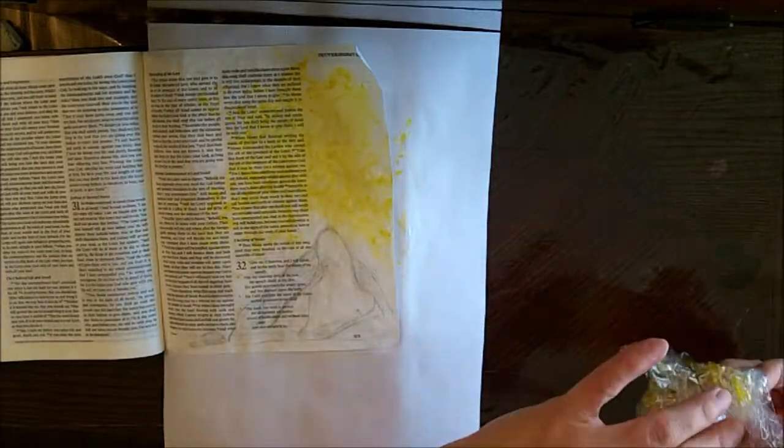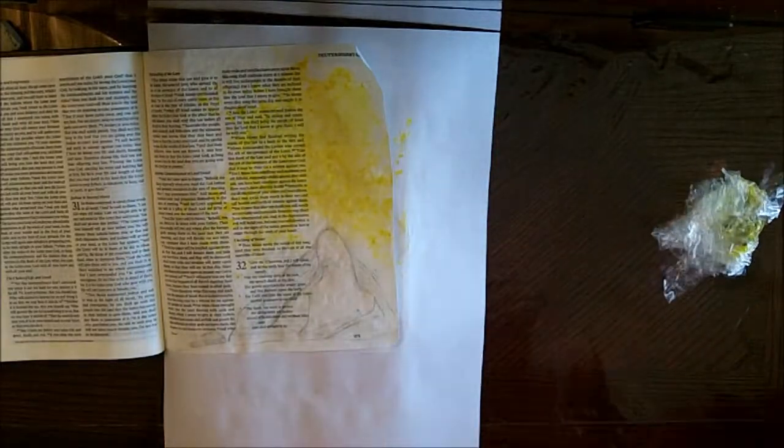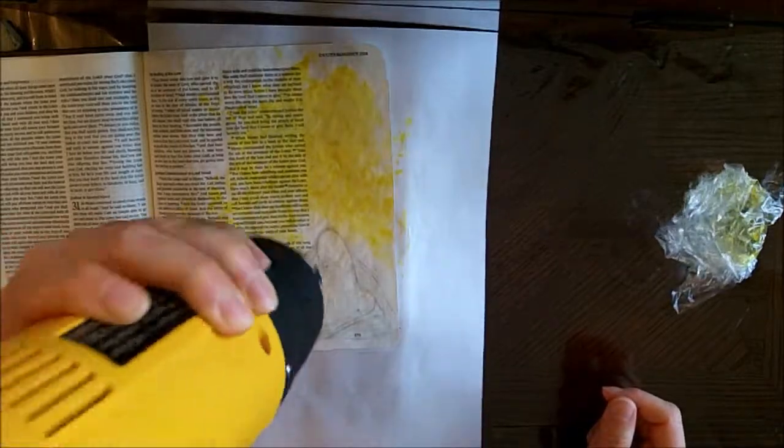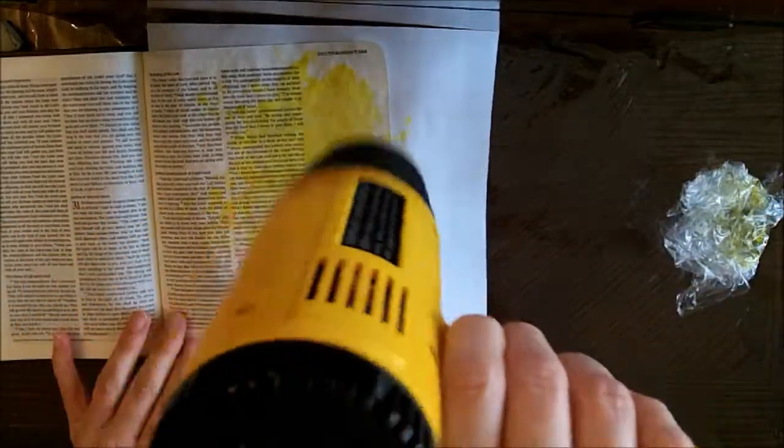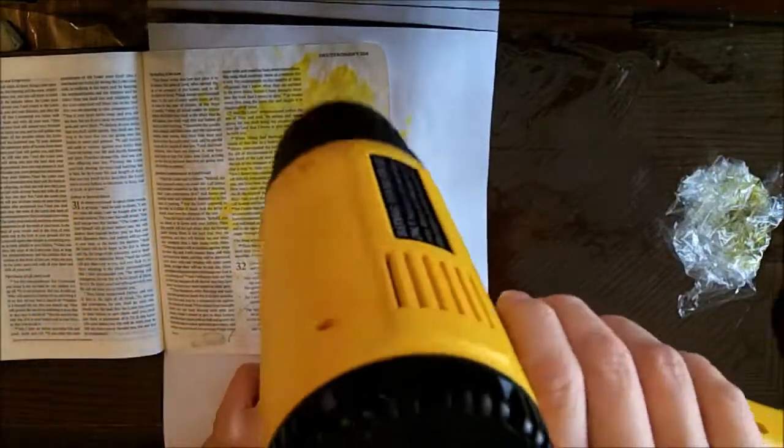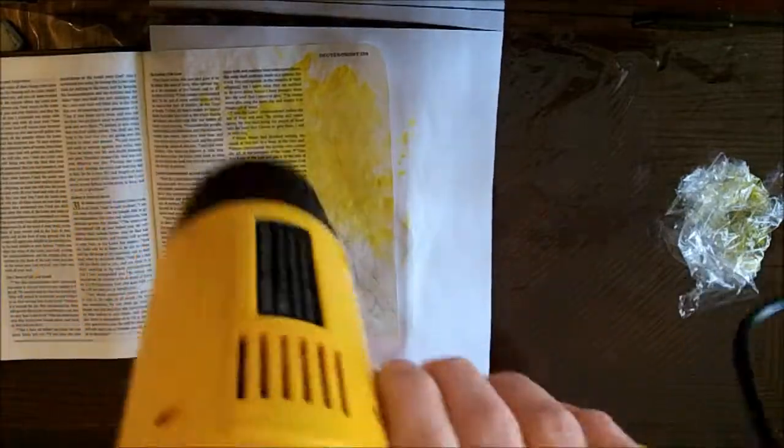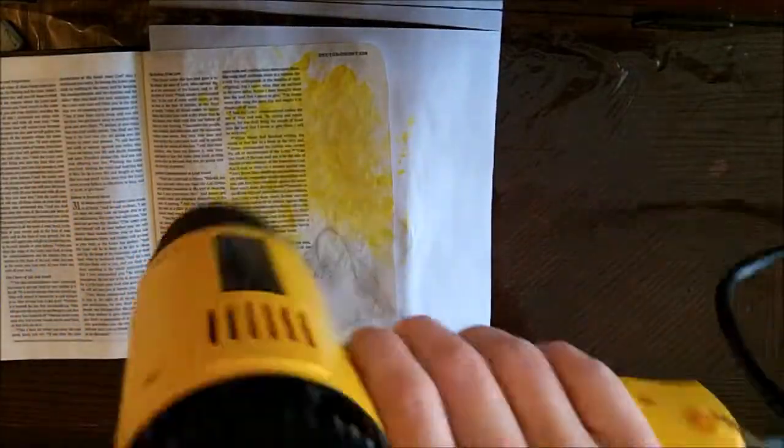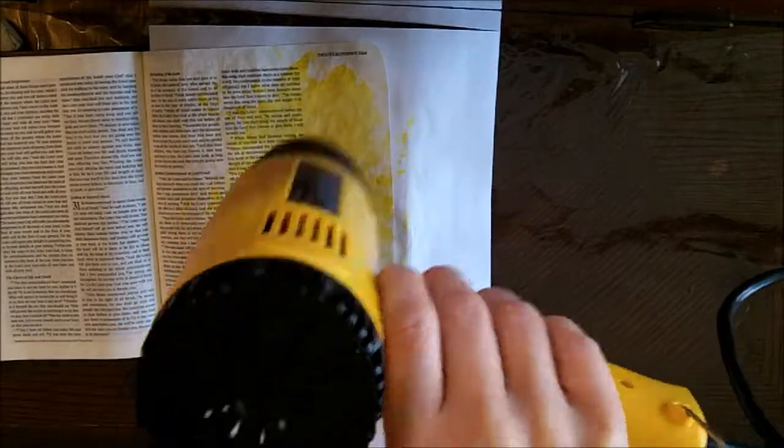This is a yellow from the Tim Holtz mini distress ink kit number one—I'll link that below as well in the comments. I'm just heat drying in between. I wanted to see the back of it to make sure it didn't go through those three layers of gesso, which it didn't. It was awesome.